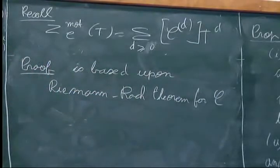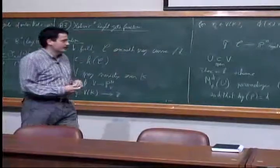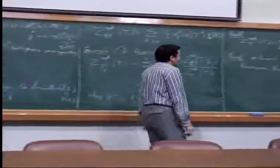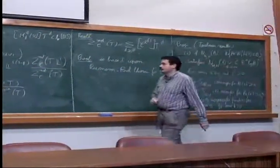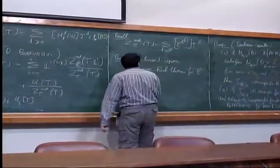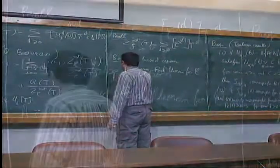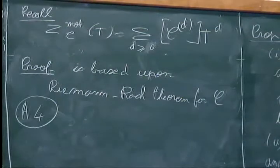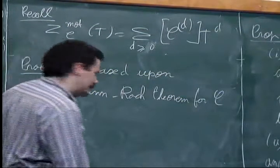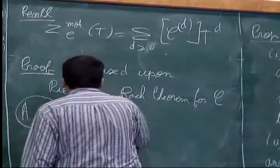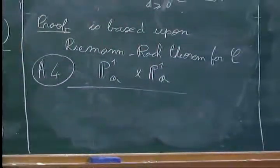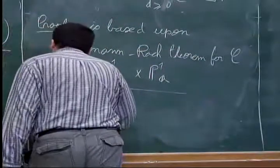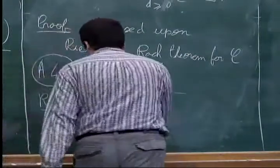To finish what I want to explain today — it remains ten minutes — so I won't be able to go very far. But let me start with A4: the simplest example after P^n is a product of projective spaces. Let's take simply P^1(Q) × P^1(Q). One of the points of this example is that the height is not unique — there is a choice. In fact, there is a two-parameter family of heights on P^1 × P^1.